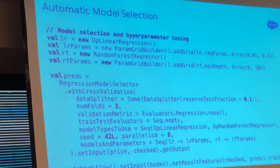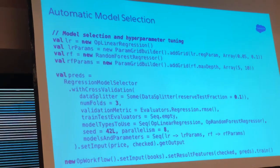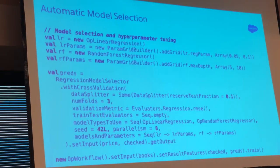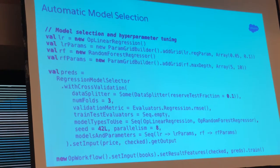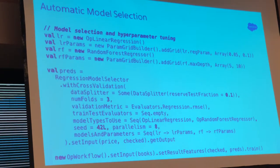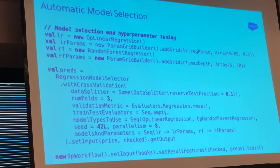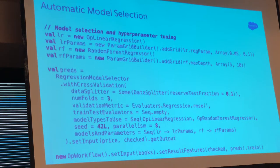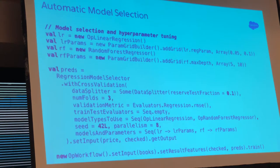From the user perspective it looks quite simple. You can pick families of models: for example, I want a linear regression and a random forest regressor. You specify a grid — this grid can be very large. Imagine XGBoost: it has hundreds of parameters. You definitely don't want to do that manually, so you feed it into the model selector and let Spark take care of it.